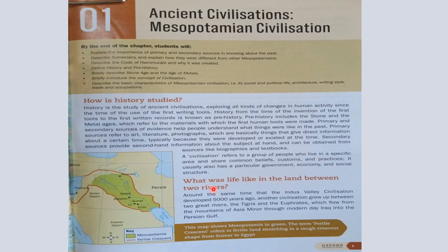What was life like in the land between two rivers? Around the same time that the Indus Valley civilization developed, 5,000 years ago, another civilization grew up between two great rivers — the Tigris and the Euphrates — which flow from the mountains of Asia Minor through modern-day Iraq into the Persian Gulf. The area in between these two rivers was what we call Mesopotamia.